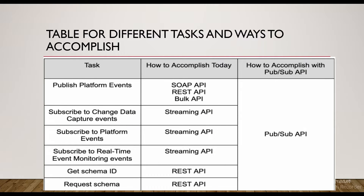Here is a small table showing the different tasks and how to accomplish them today versus how to accomplish them with the PubSub API. The task of publishing platform events can be done with SOAP API, REST API, or Bulk API. Subscribing to change data capture events, platform events, and real-time monitoring events is done via Streaming API. The key point is that all these tasks are now comprised into a single API — the PubSub API — instead of using different APIs.